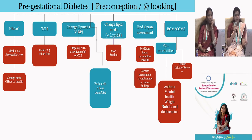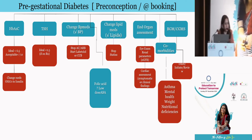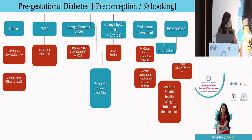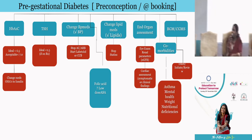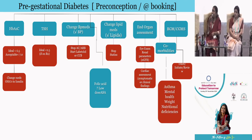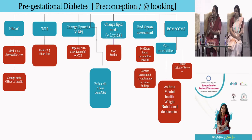For end organ assessment in preconception counseling: a routine fundus examination to check retinal status is essential. Renal parameters should be assessed, ideally calculating eGFR based on creatinine. For cardiac assessment, if there is a strong family history of cardiac disease, hypertension, obesity, or a history of PCOS, a routine cardiac evaluation — at least a baseline ECG and echocardiogram — is advisable. These are the ideal steps to assess end organ damage.